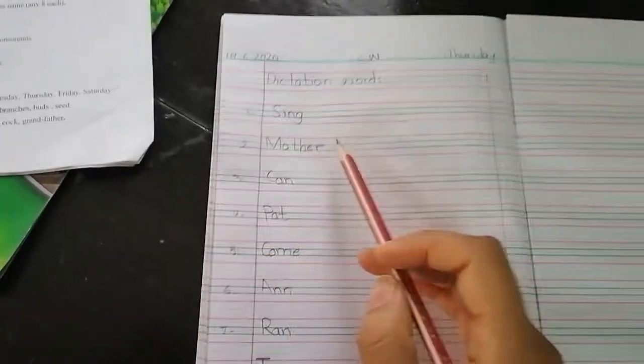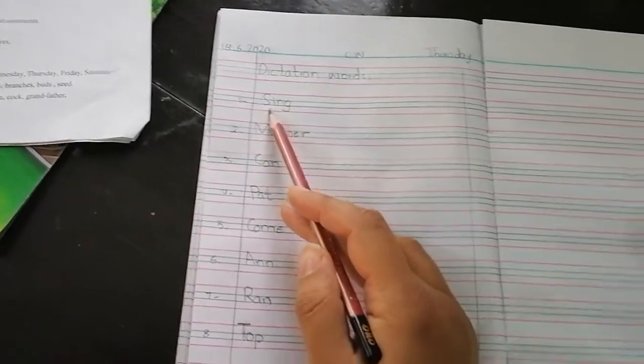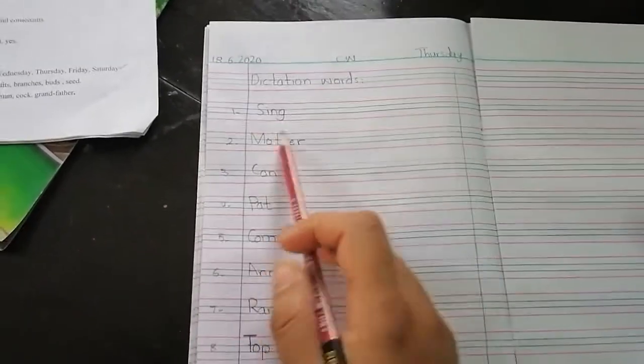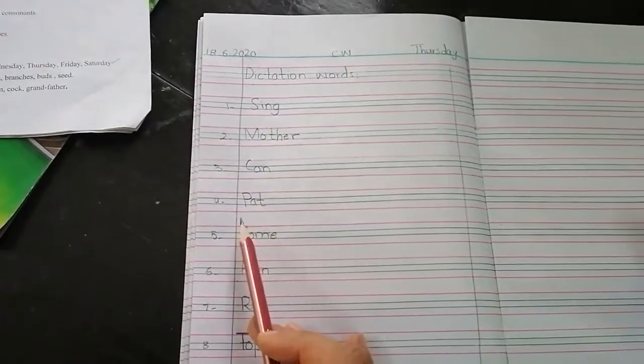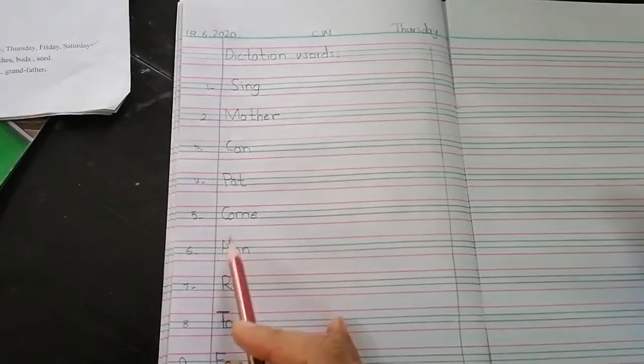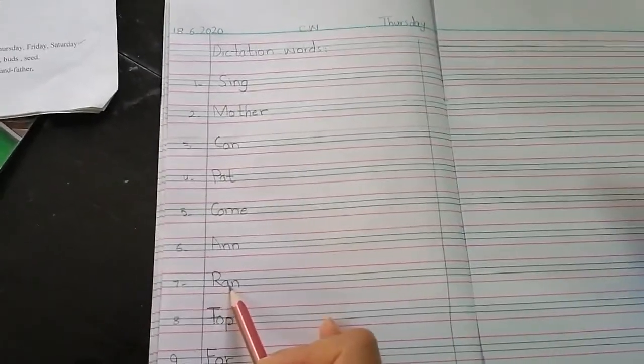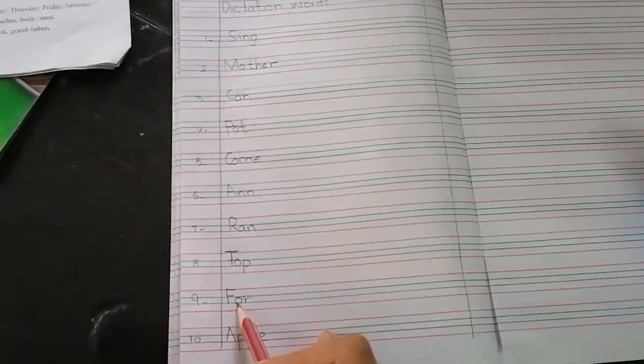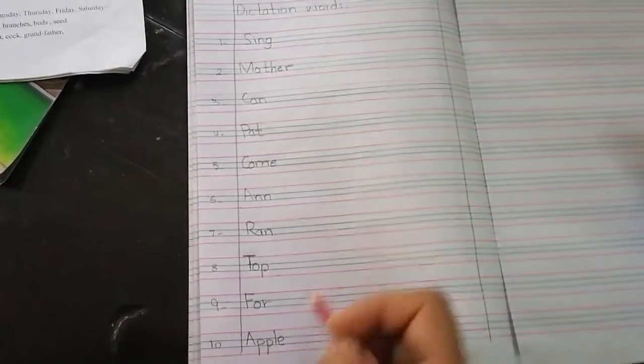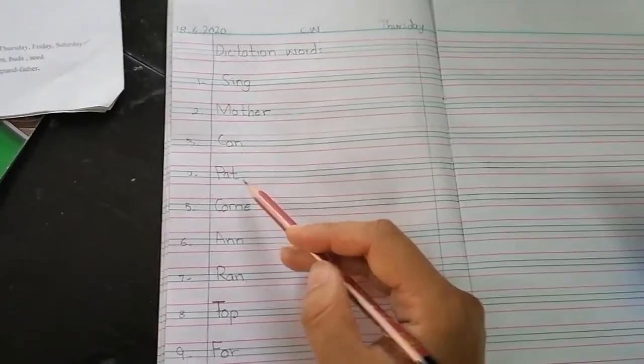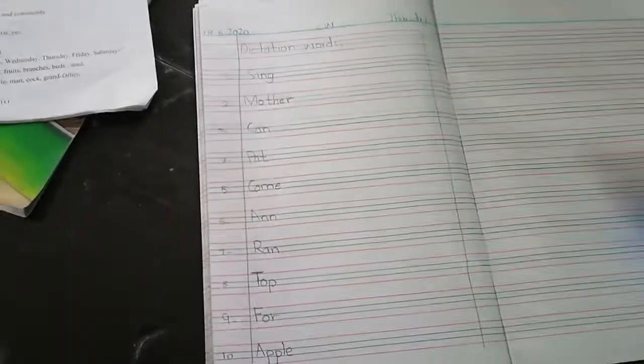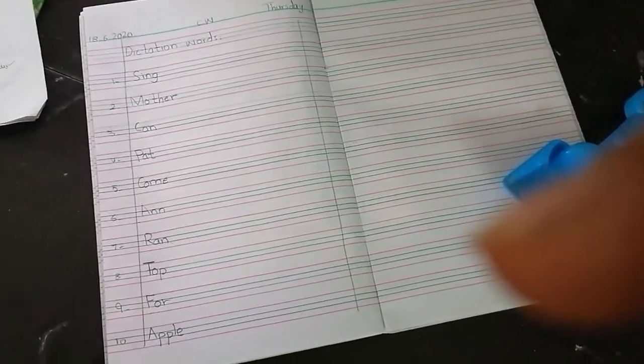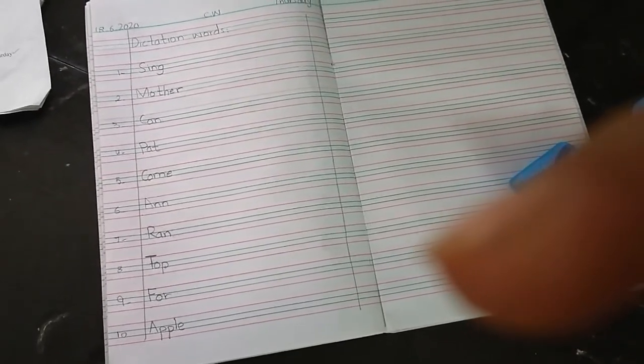These are the dictation words. First is sing S-I-N-G, second is mother M-O-T-H-E-R, can C-A-N, pat P-A-T, come C-O-M-E, Ann A-double N, rain R-A-N, top T-O-P, for F-O-R, apple A-double P-L-E. These are the dictation words for writing and learning. Allah Hafiz.